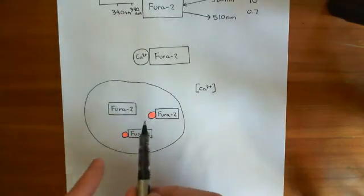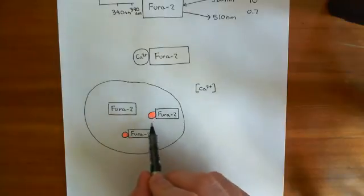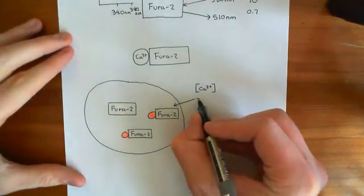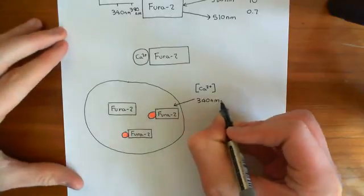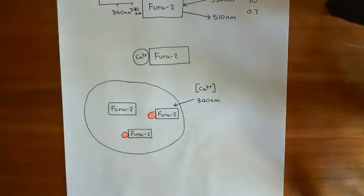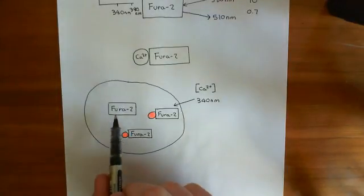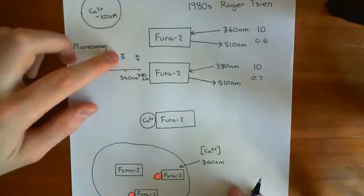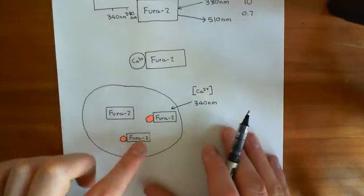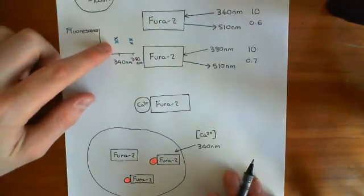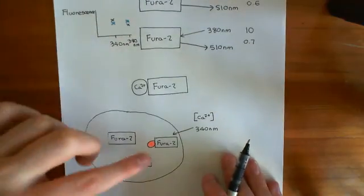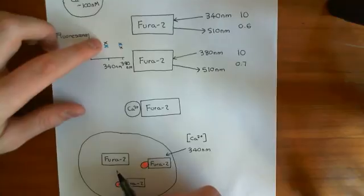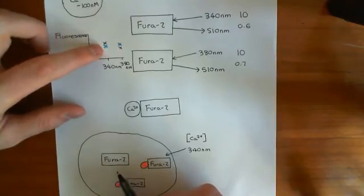At a certain calcium concentration, you will have some Fura-2s bound to calcium and some which are not, and the fraction will be determined by the calcium concentration. A higher calcium concentration will increase the fraction of Fura-2 molecules that have calcium bound. So when you stimulate the cell with wavelengths of 340 nanometers, the Fura-2s that aren't bound to calcium will have a certain high fluorescence, and the ones which are bound to calcium will emit slightly less. The actual fluorescence you get back will be somewhere in between, because you've got a mixture.